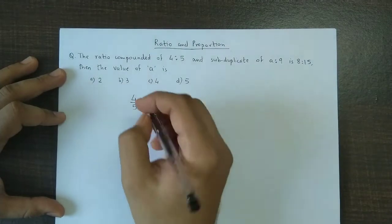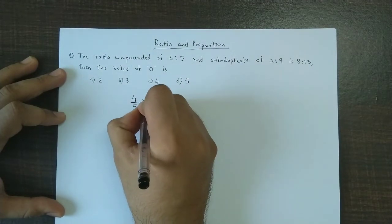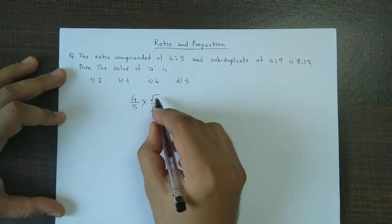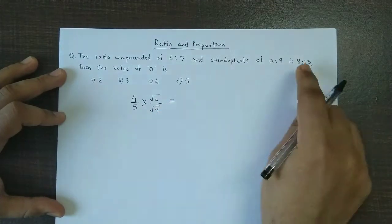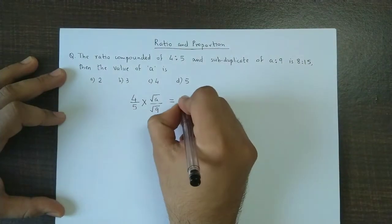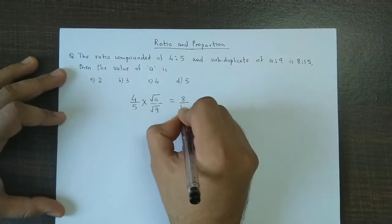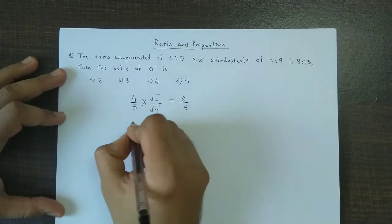To compound these two ratios, the compound ratio will be 4/5 × √a/√9, and this value has been given as 8:15. If we simplify this further, we have 4/5 × √a/3 = 8/15.